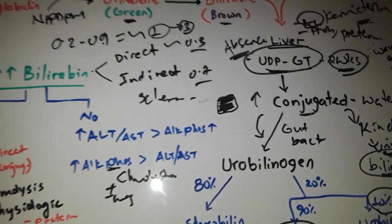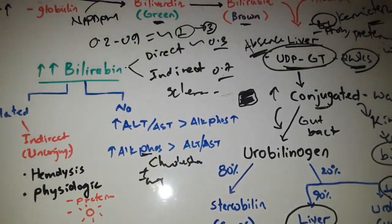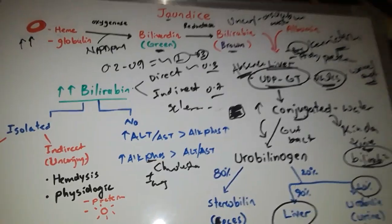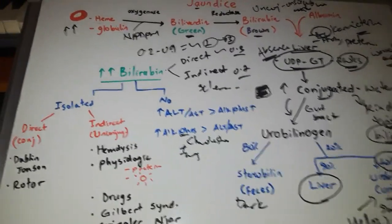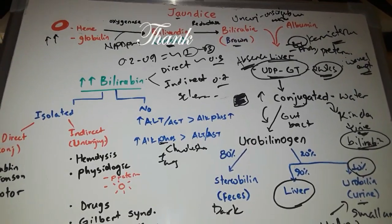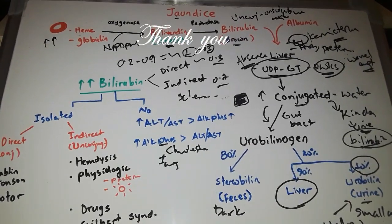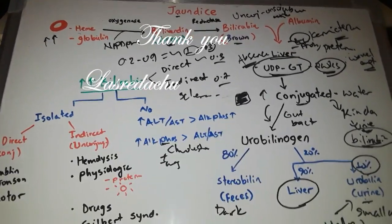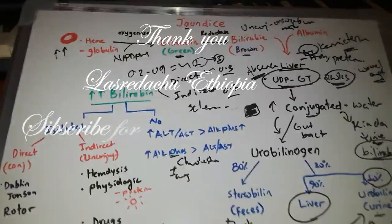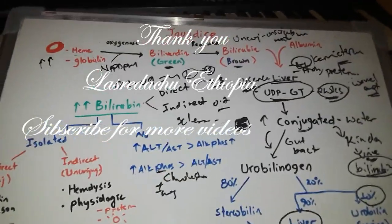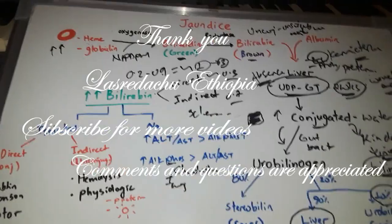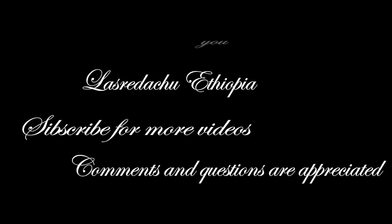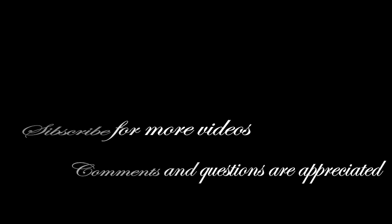Jaundice is classified based on whether the bilirubin is direct or indirect. I hope this discussion is clear, and questions and comments are appreciated.